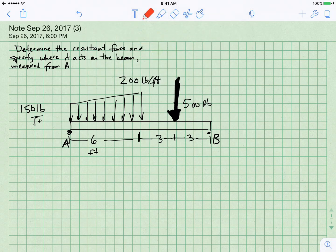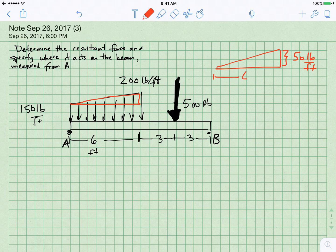I observe that I can break up this distributed load into a triangle shape and I'm going to put that off to the side to help make it a little clearer. The height of this triangle will be 200 minus 150 which is 50 pounds per foot. That is the height of the triangle and the length of the triangle is six feet.